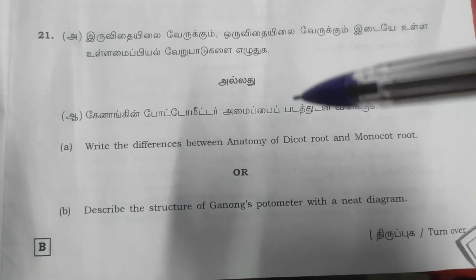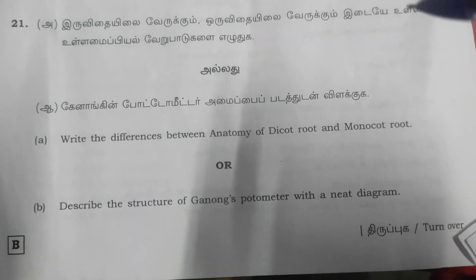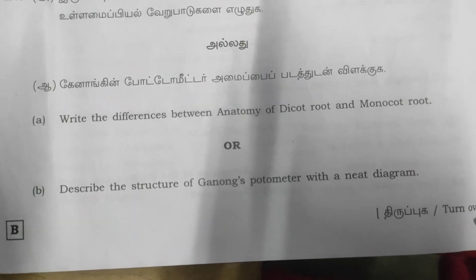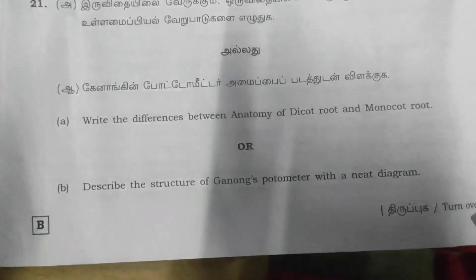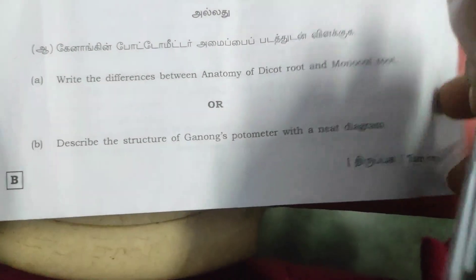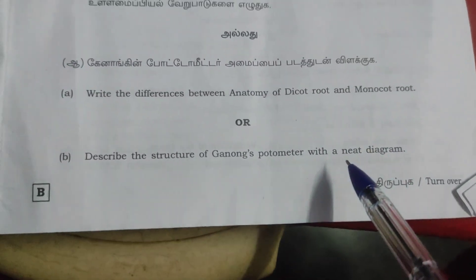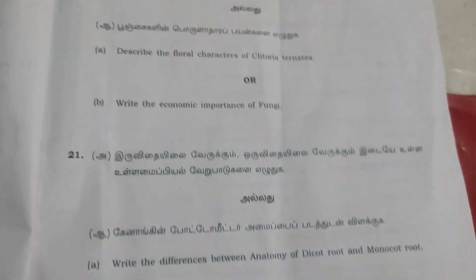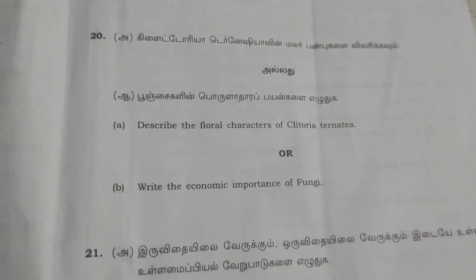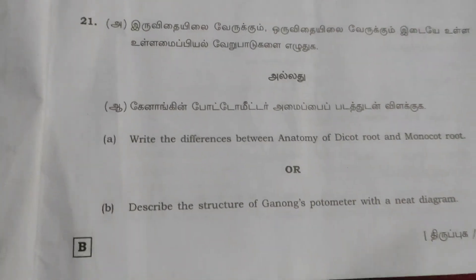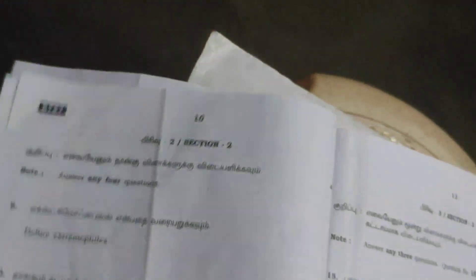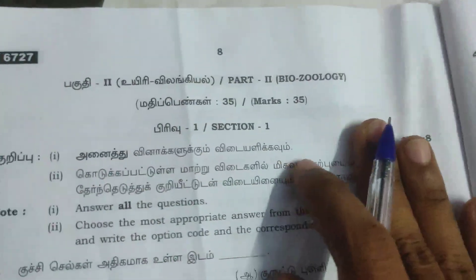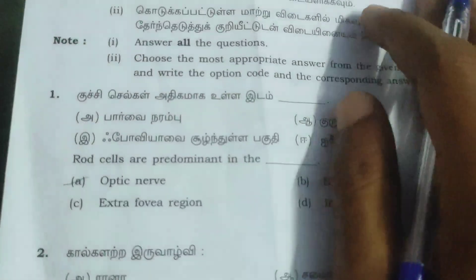You can see the difference between the anatomy of the dicot and the monocot root, and describe the structure of a ganglion photometer with a neat diagram. The diagram is very important. You can see the diagram for the 3-mark question on the diagram.